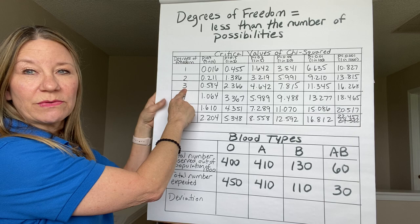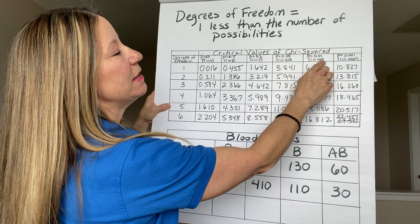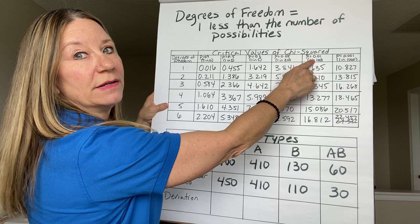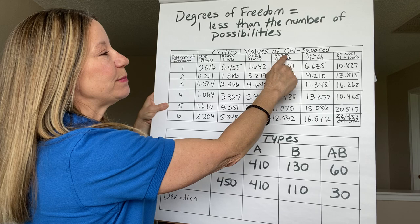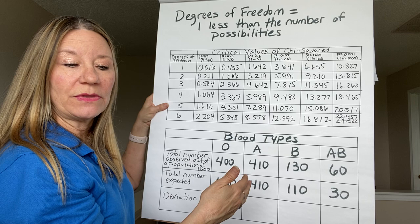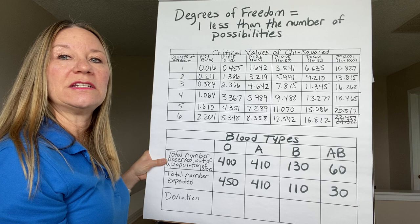The second thing we need to decide is at what level of confidence do we want to judge our answer. As you move across the chi-square table, it goes from a p-value of 0.9, 0.5, 0.2, 0.05, 0.01, and 0.001. In biology we're usually comfortable with a p-value of 0.05, sometimes 0.01. Using p = 0.05 means I'm 95% confident in my answer that the deviation is either due to chance or is not due to chance.